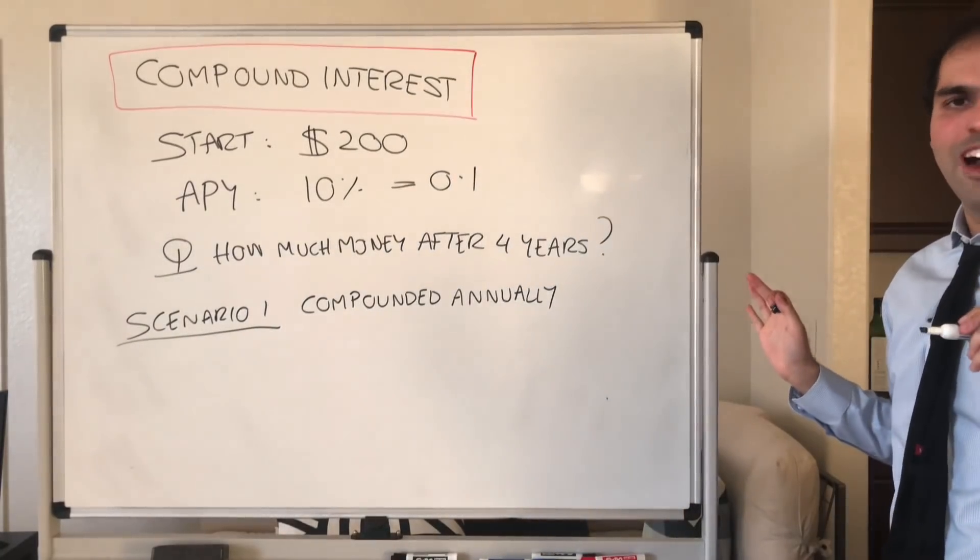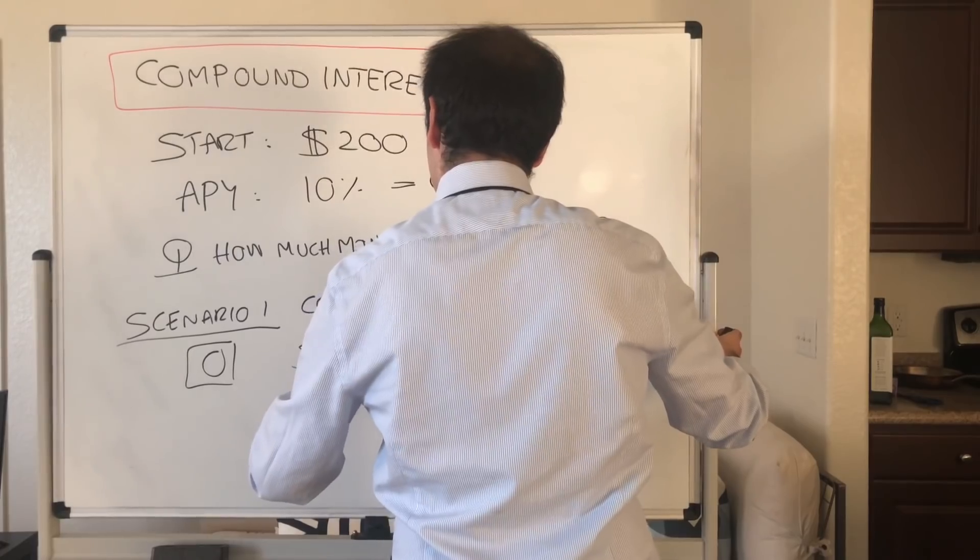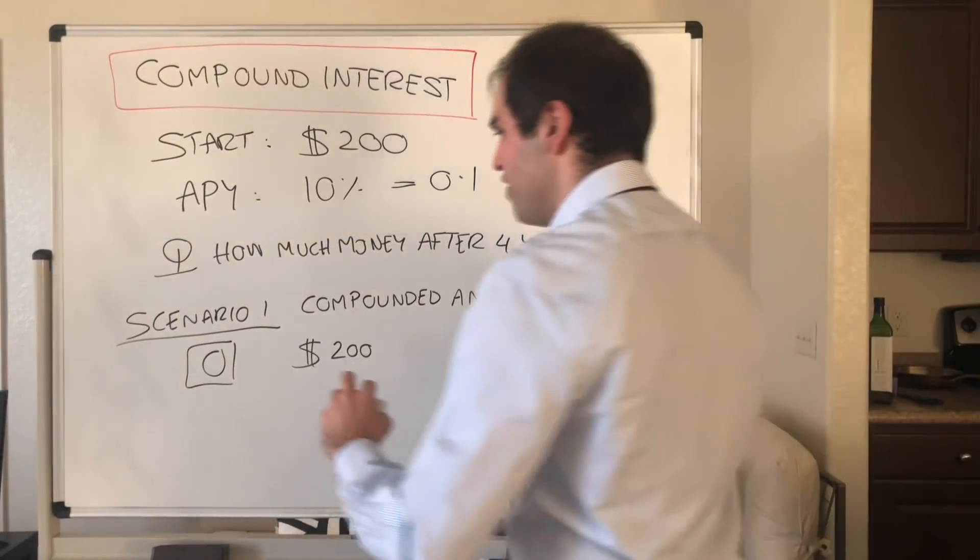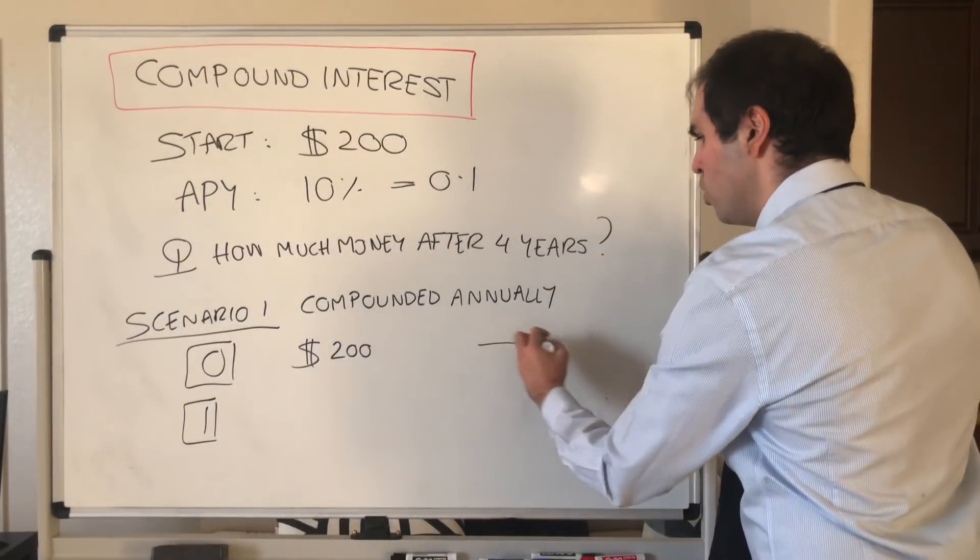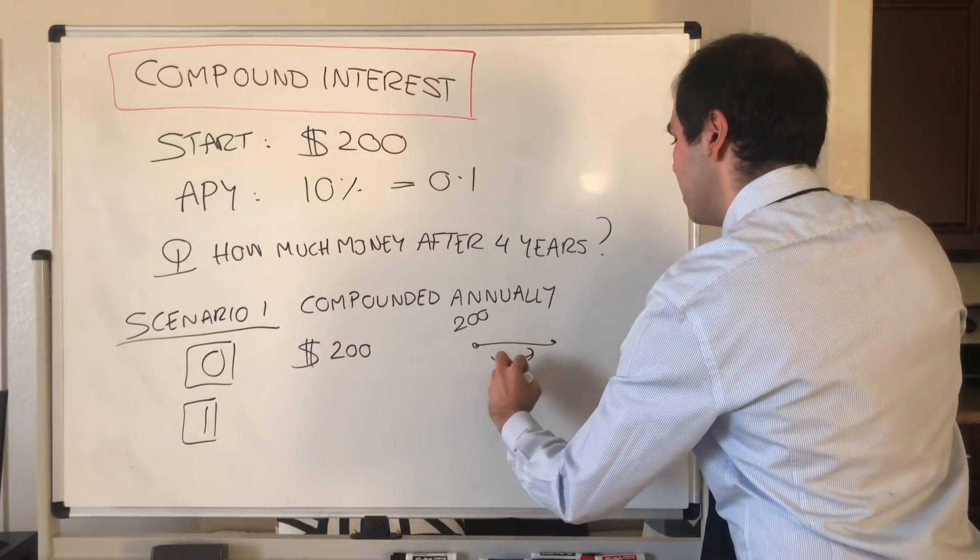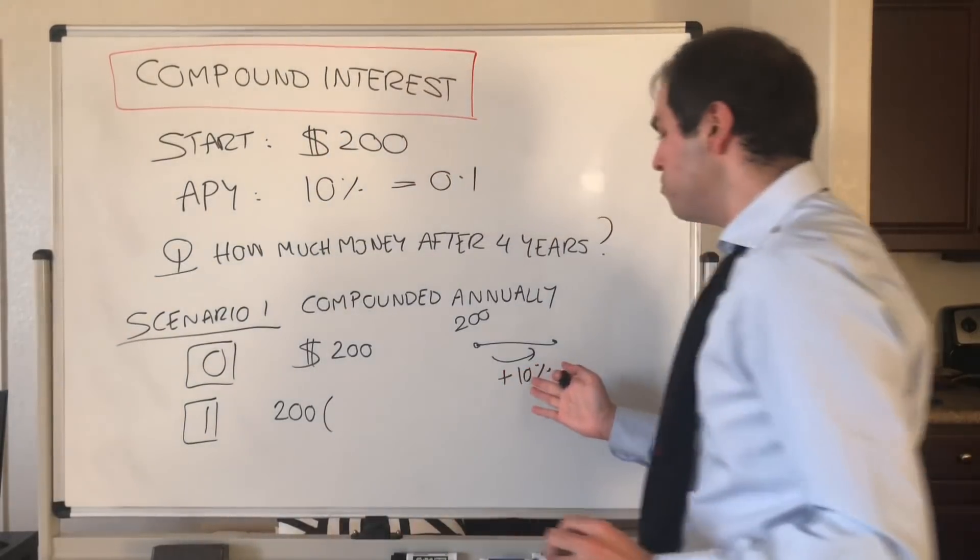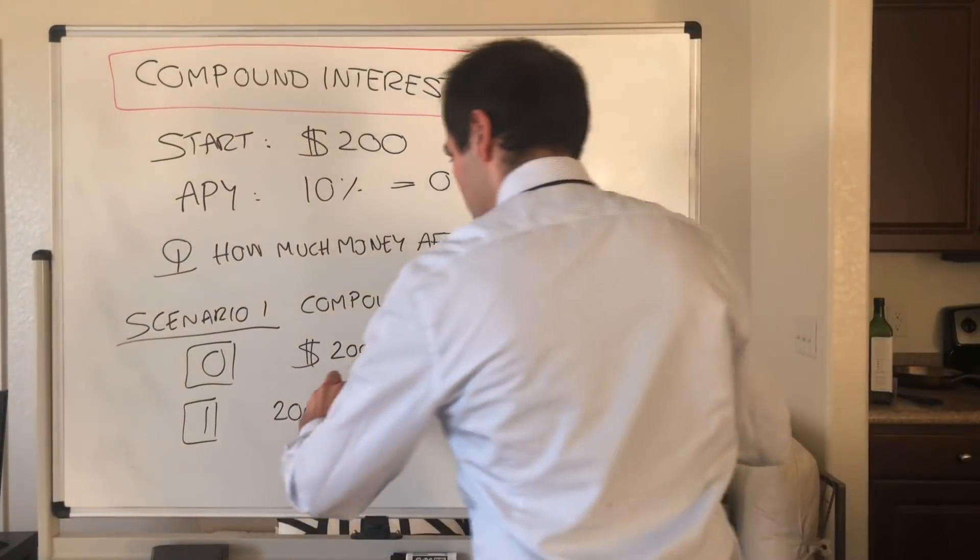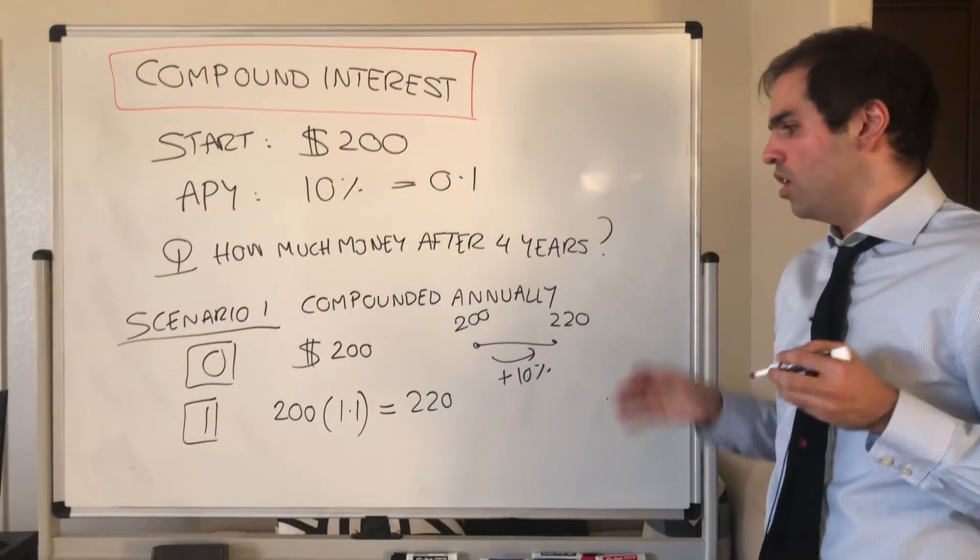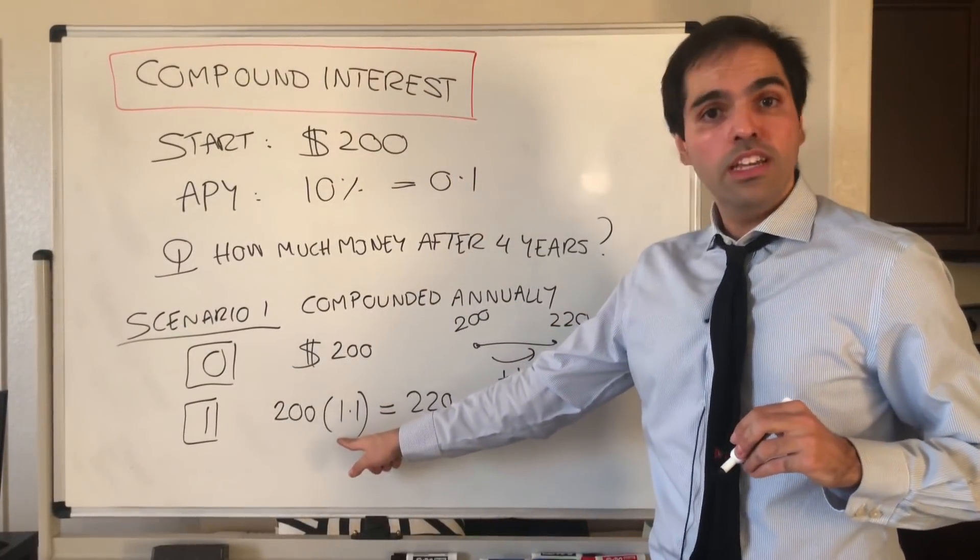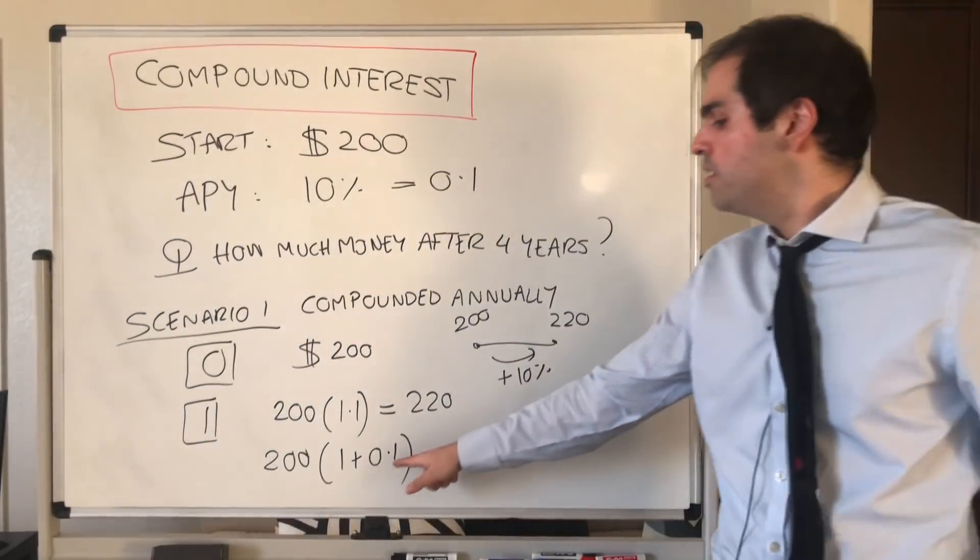Then let's see how much money you have after four years. So initially, in year zero, you have $200. And the question is, how much money will you have in one year? Well, all we're doing, we're simply giving you 10% interest on those $200. So you have $200, and we're adding 10% interest. Then the amount of money you have is $200 times 1.1, which is basically $220, which makes sense. If you add 10% to $200, you get $220. But this we can also write as $200 times 1 plus 0.1. And that's useful in case the interest rate is different.